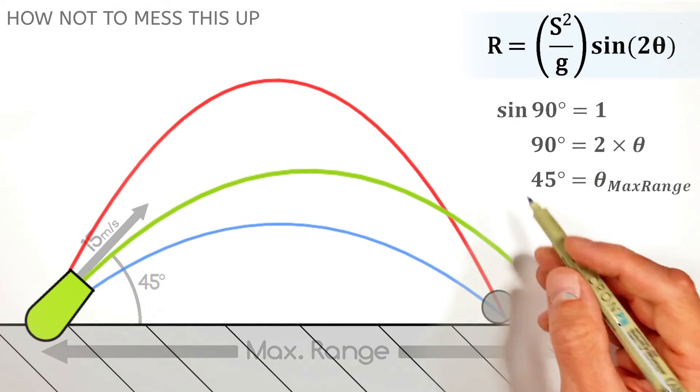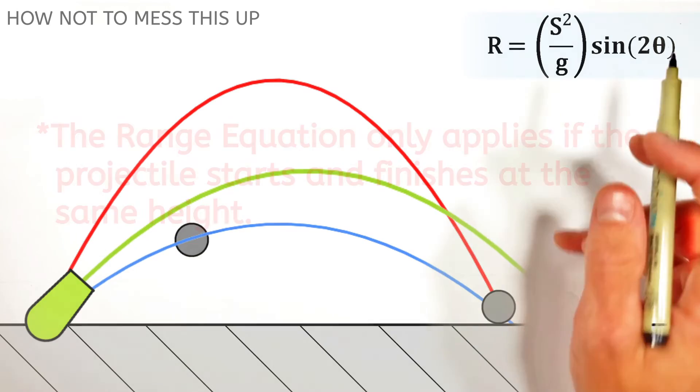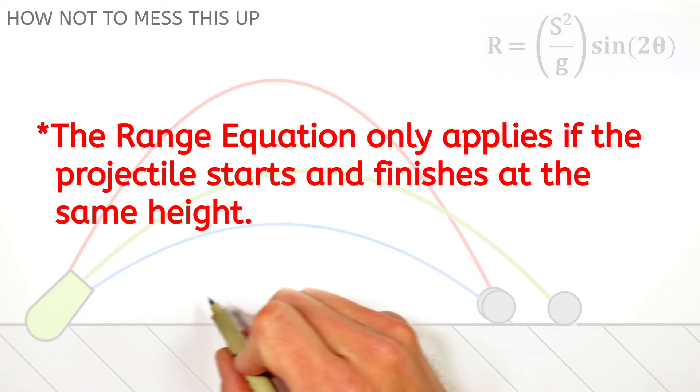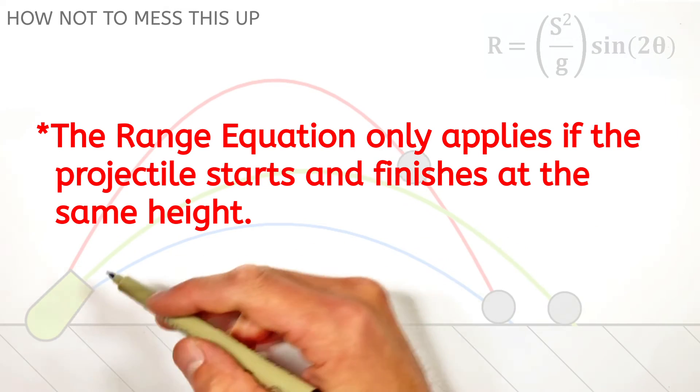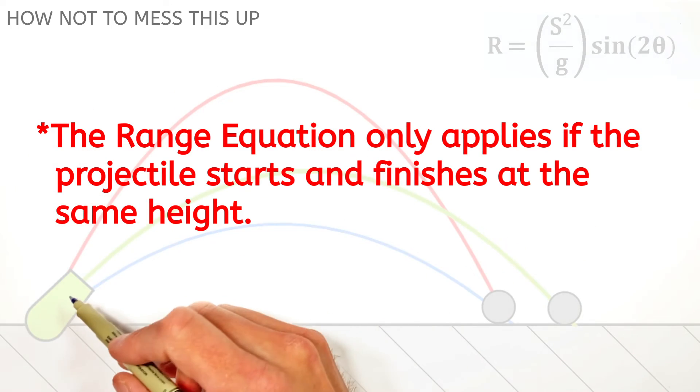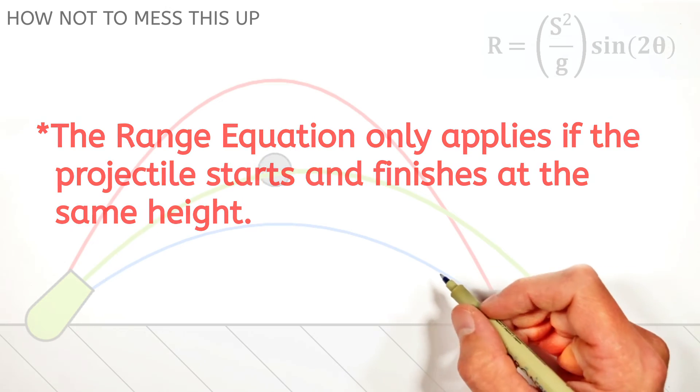Now, realize, there's some very serious limitations to this range equation. The biggest being, you can only ever use the range equation when we're shooting something across a horizontal surface. If we were to put this cannon up on a cliff or something like that, then the range equation would no longer apply.